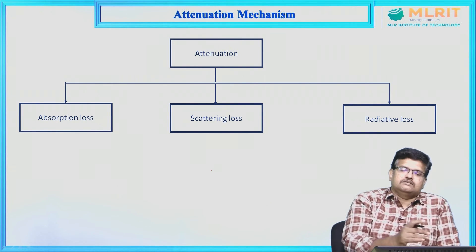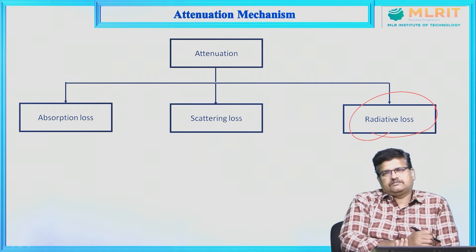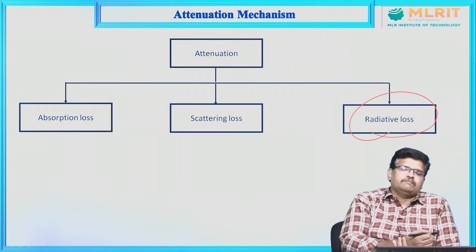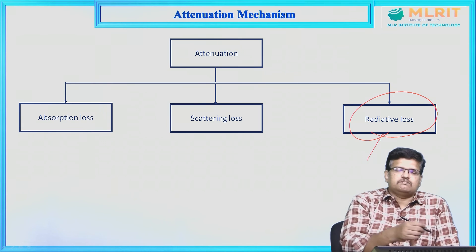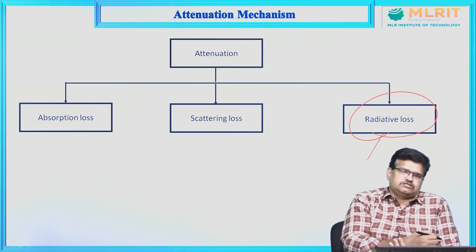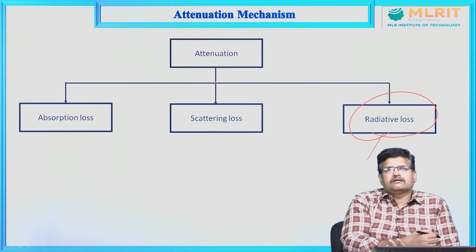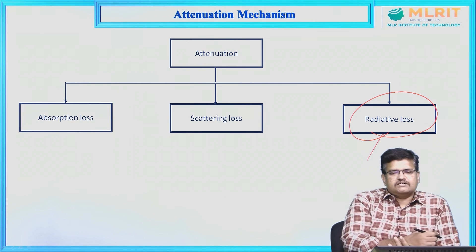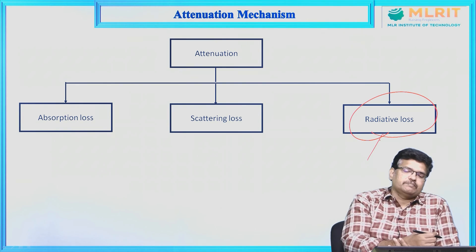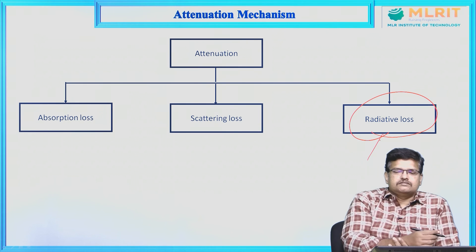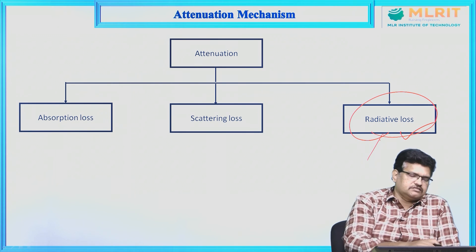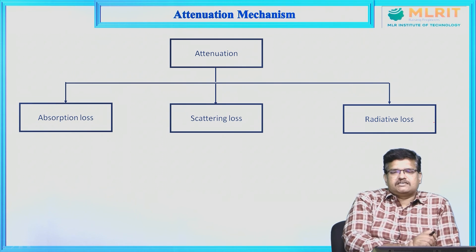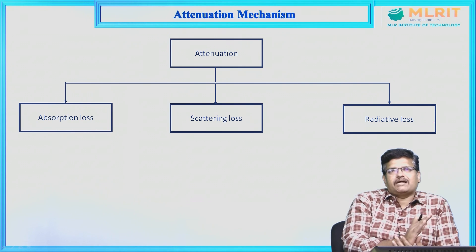Another important loss is radiative losses, which are based on optical power loss. These include bending loss and core-cladding losses. Bending loss occurs due to the bending of the fiber, and bending may be characterized into microscopic bending and macroscopic bending. The main thing in signal degradation is attenuation — it is the important parameter that leads to signal degradation in the optical fiber communication system.